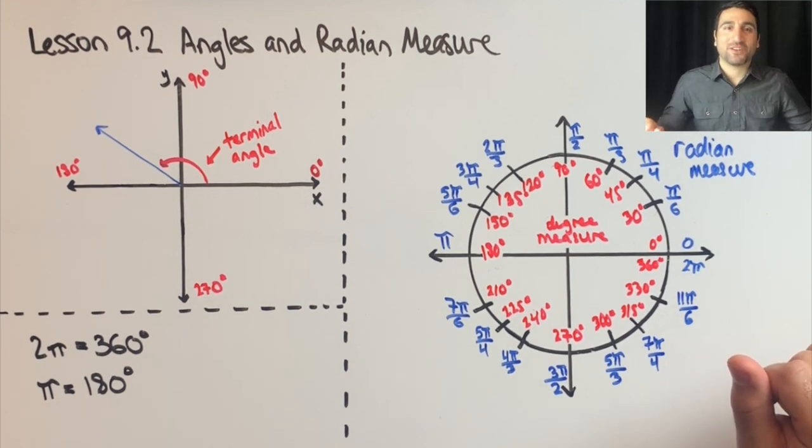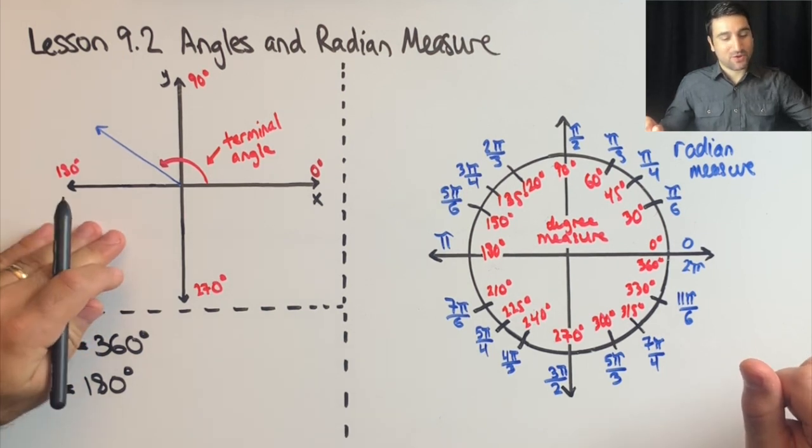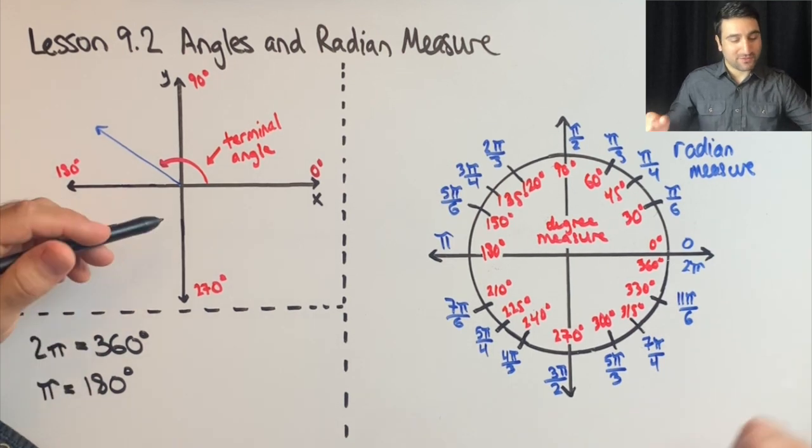Hey, what's up? We're going to go over the lesson portion of the section Angles and Radian Measure, so let's go ahead and get started. This section has three main components. We're going to start with the first one in the top left here.